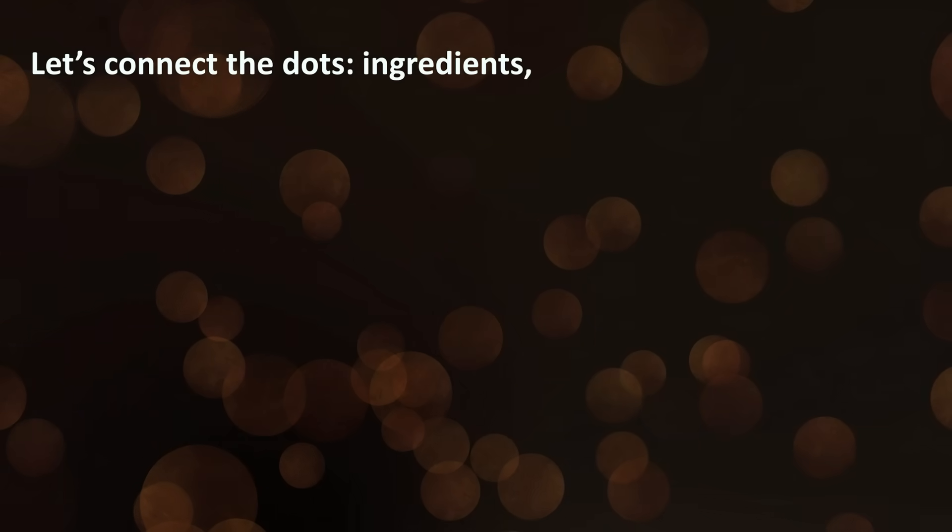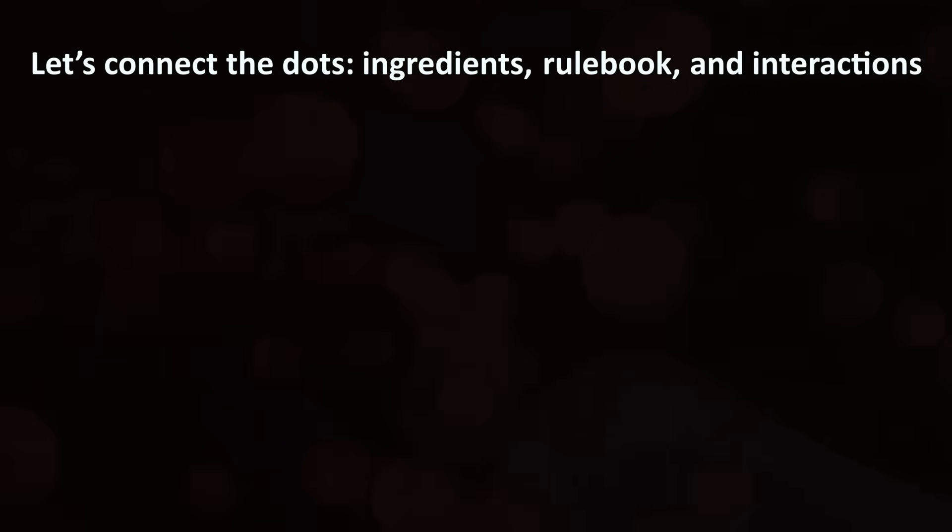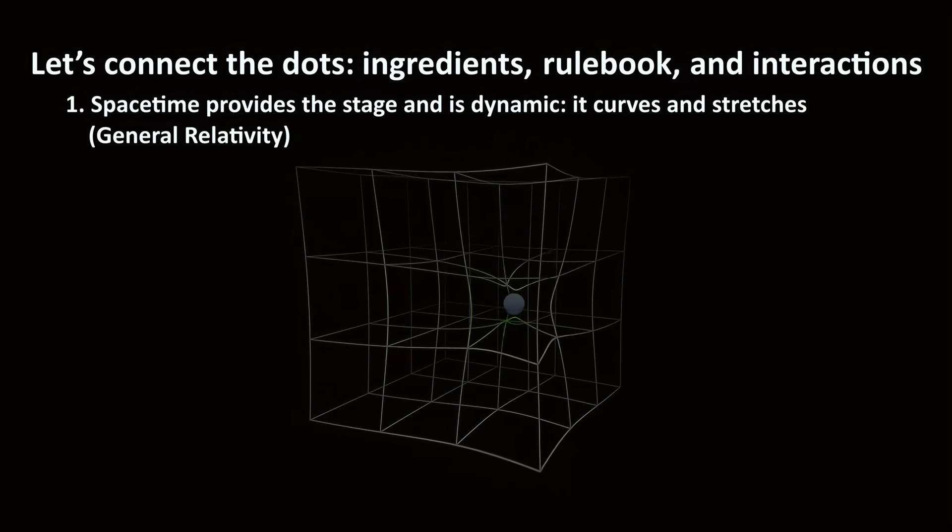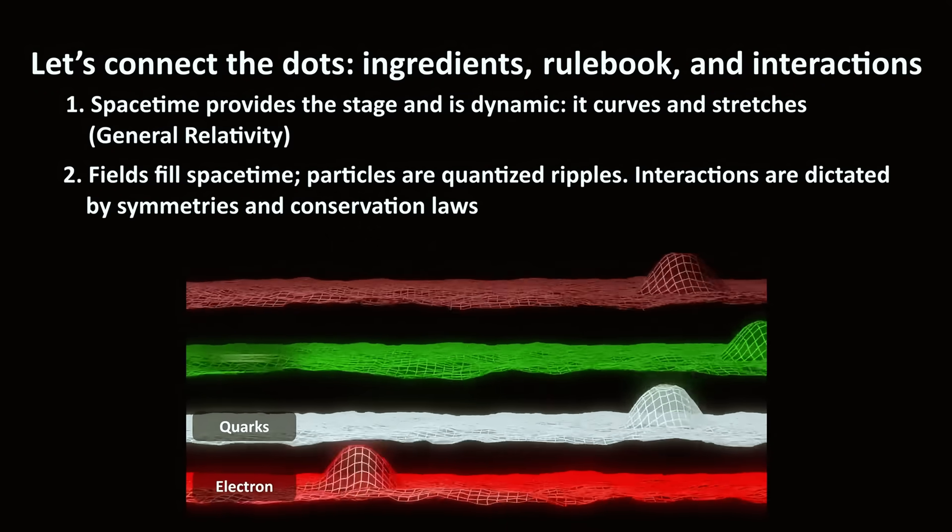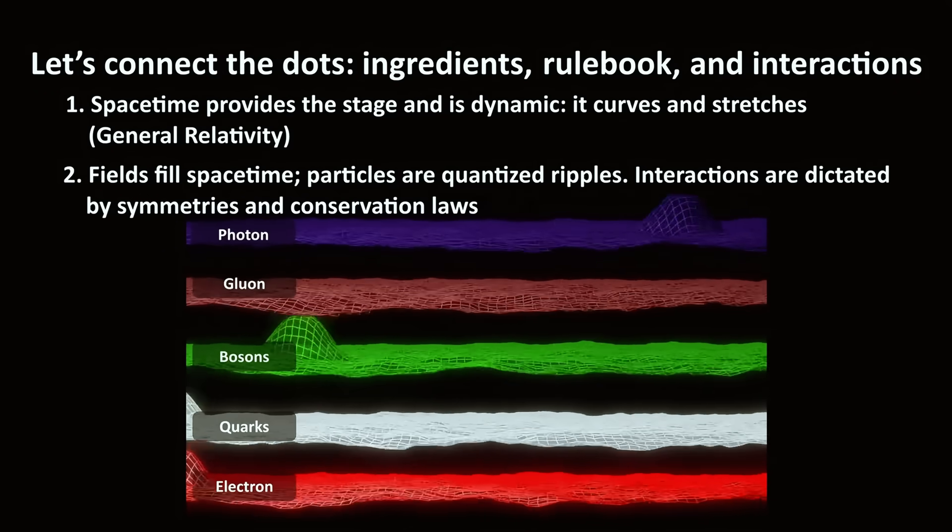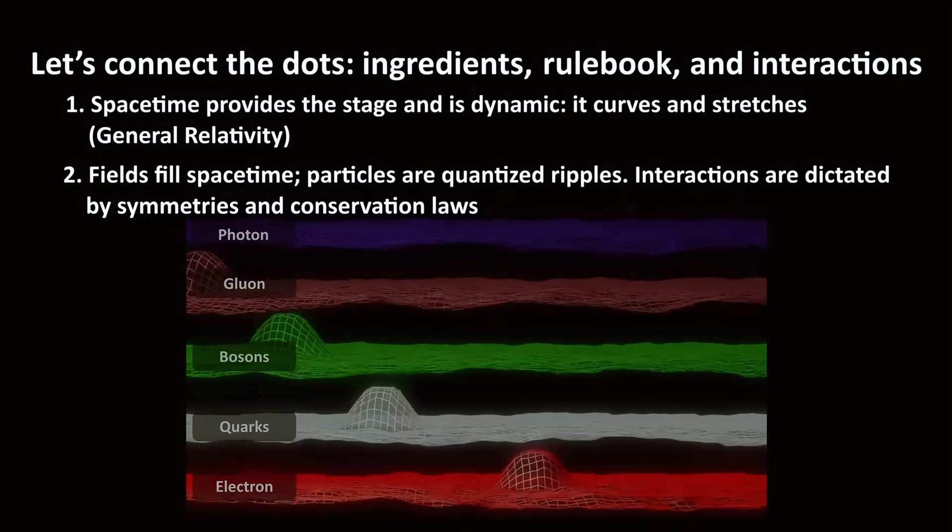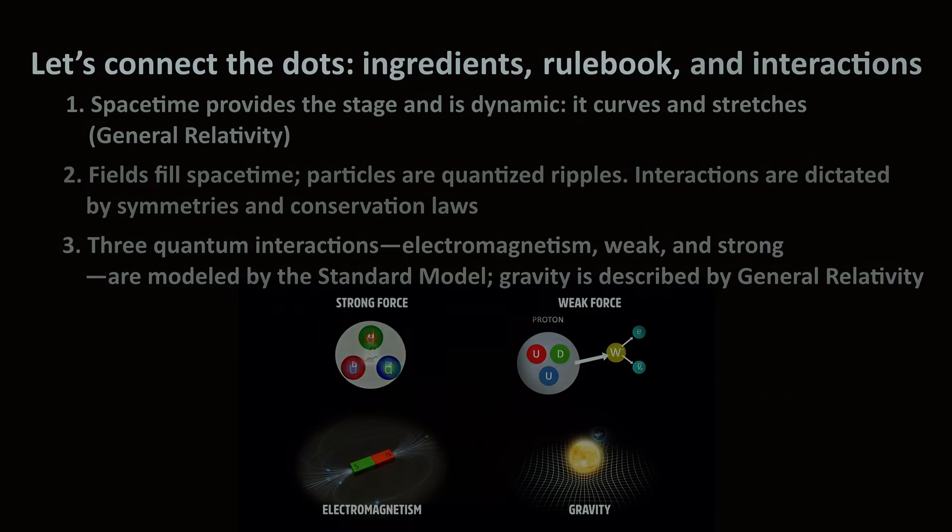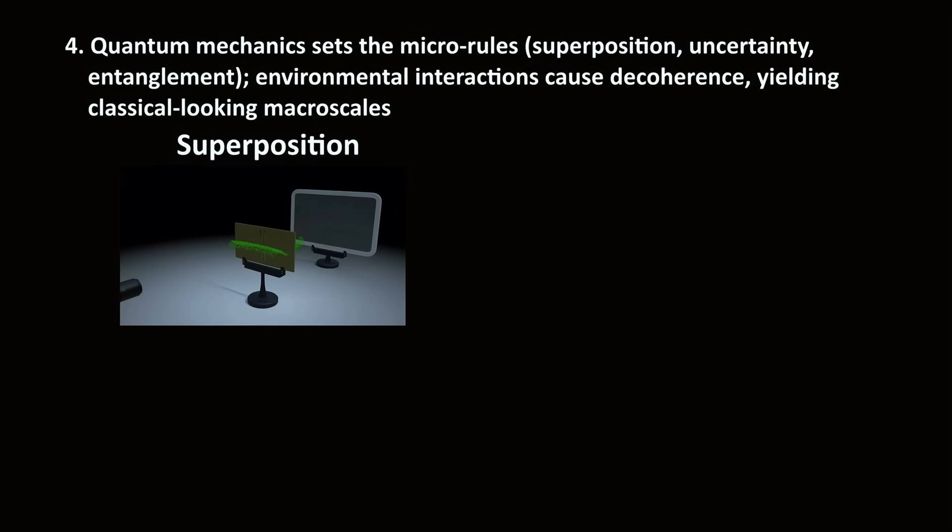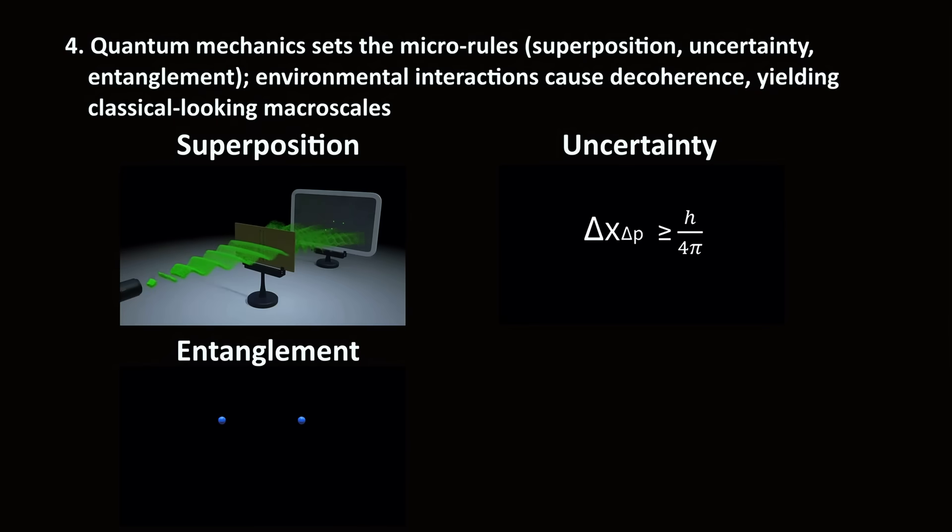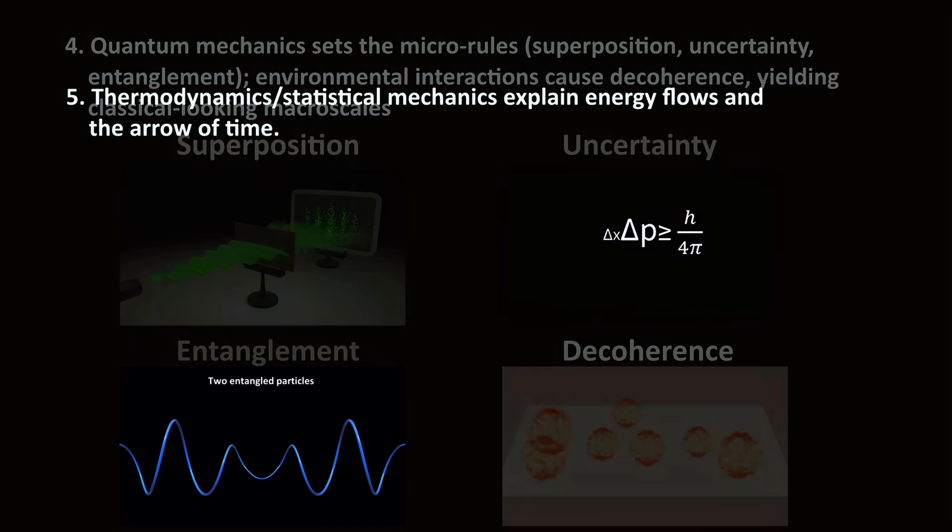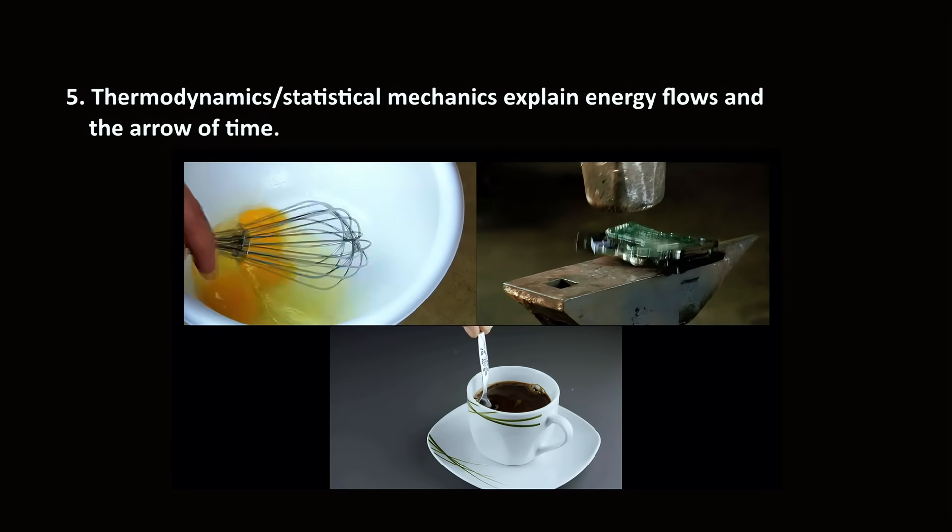Let's now connect the dots. Ingredients plus rulebook plus interactions. So this is how everything works. Space-time provides the stage and is dynamic. It curves and stretches. Fields fill space-time. Particles are quantized ripples. Interactions are dictated by symmetries and conservation laws. Three quantum interactions, electromagnetism, weak and strong, are modeled by the standard model. Gravity is described by general relativity. Quantum mechanics sets the micro rules: superposition, uncertainty, entanglement. Environmental interactions cause decoherence, yielding classical looking macro scales. Thermodynamics and statistical mechanics explain energy flows and the arrow of time.